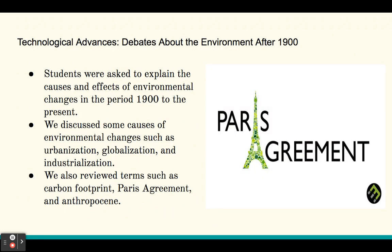Then we talked about technological advances and debates about the environment after 1900. Students were asked to explain the causes and effects of environmental changes from 1900 to the present. We discussed causes such as urbanization, globalization, and industrialization, and reviewed terms such as carbon footprint, the Paris Agreement, and the Anthropocene — meaning the epoch or age that began with the advent of human impact on the planet.